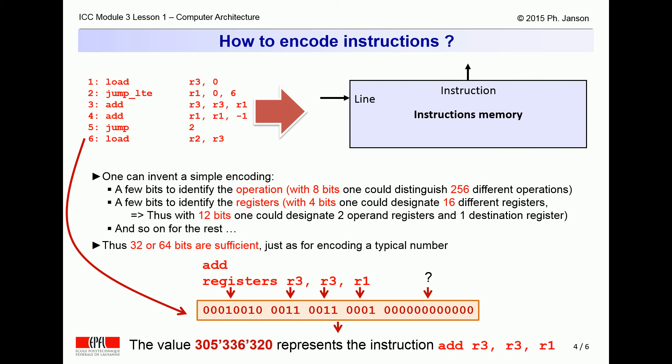For instance, a binary number such as shown on this slide, which is the decimal number equivalent 305,336,320, is a possible encoding for the instruction: add into R3 the sum of R3 and R1.